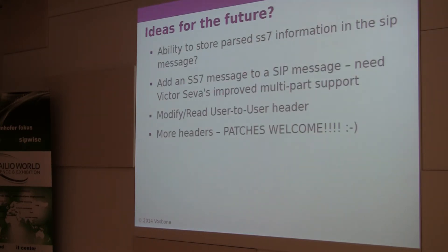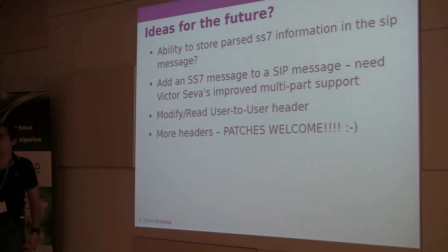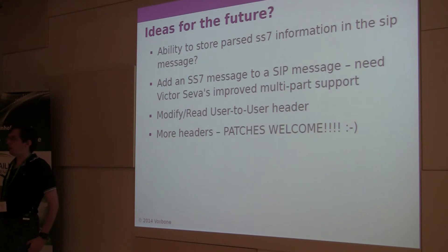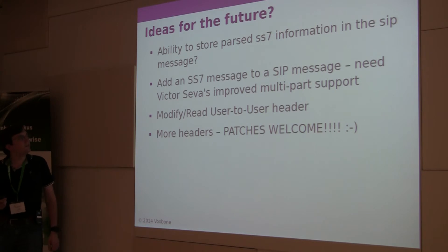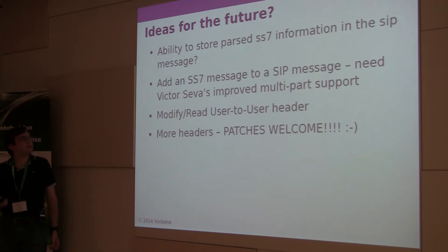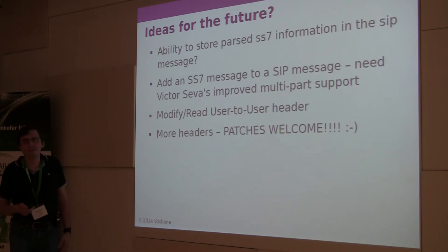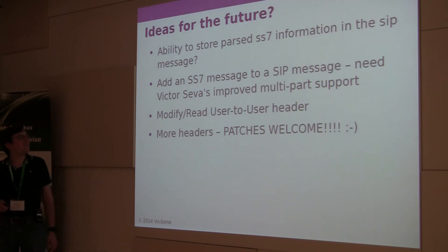So that's another idea of something that can potentially be implemented. Other things people might be interested in: currently, every time you want to get a piece of an SS7 sub-message, you have to iterate through all the bodies, find the right body, parse the sub-message, get the field, and return it — starting from scratch every call. There is currently no good way to parse and cache, so if something's already been parsed you don't have to redo the entire parsing for the next operation. I'd love to hear ideas on how to more efficiently parse bodies in Kamailio. Another thing is being able to add from scratch a new SS7 message into the body, and that's where Victor Seva's multi-part patches can potentially come in handy.